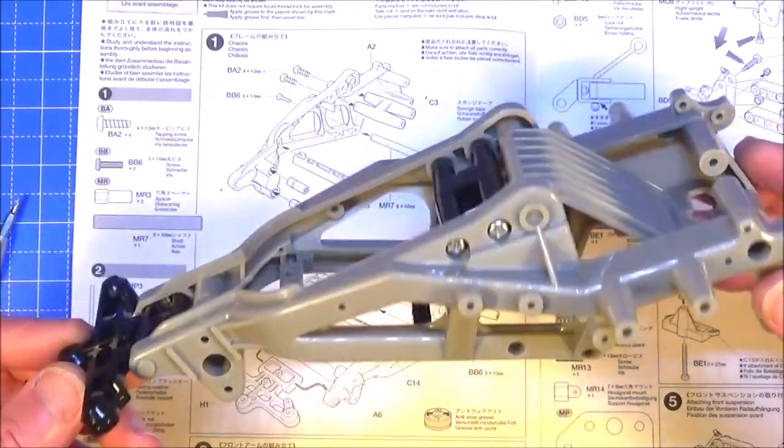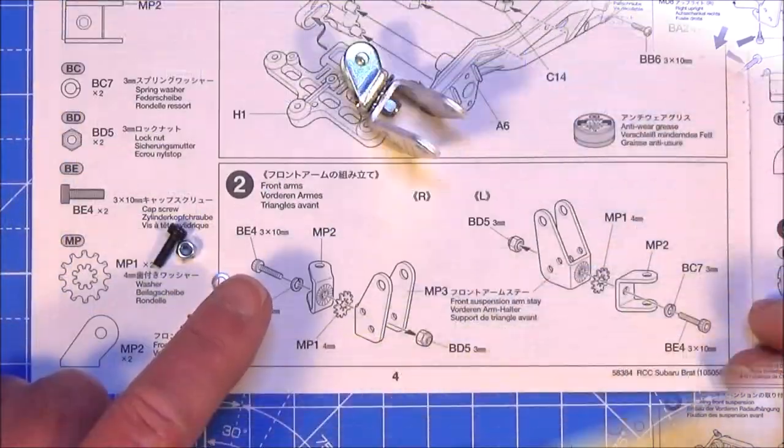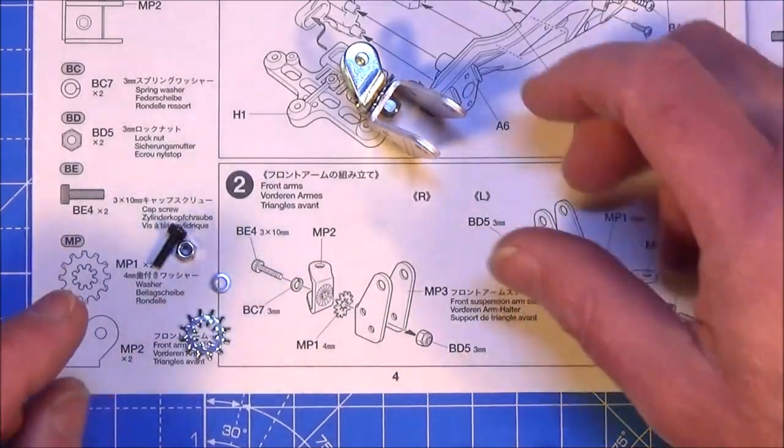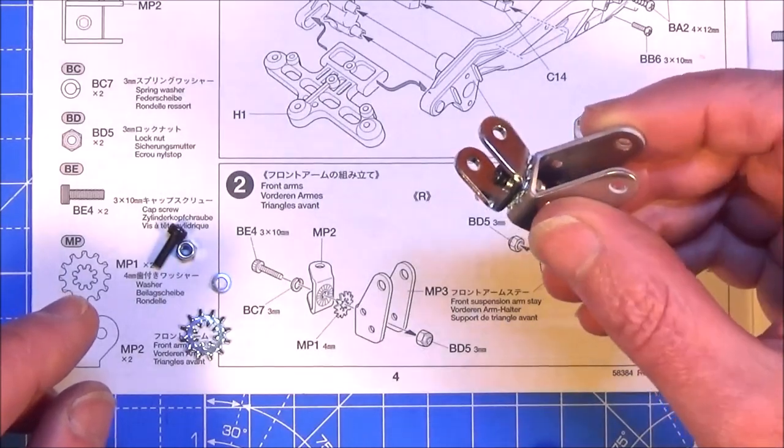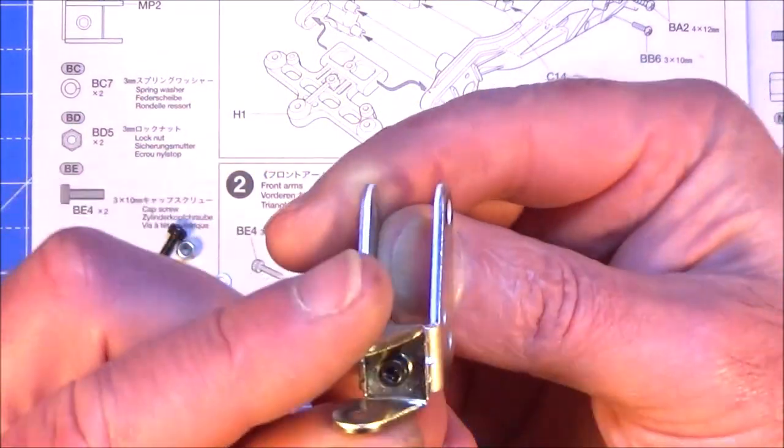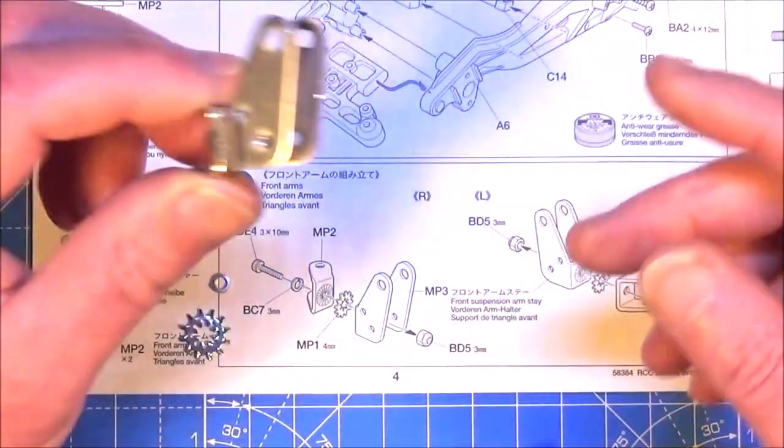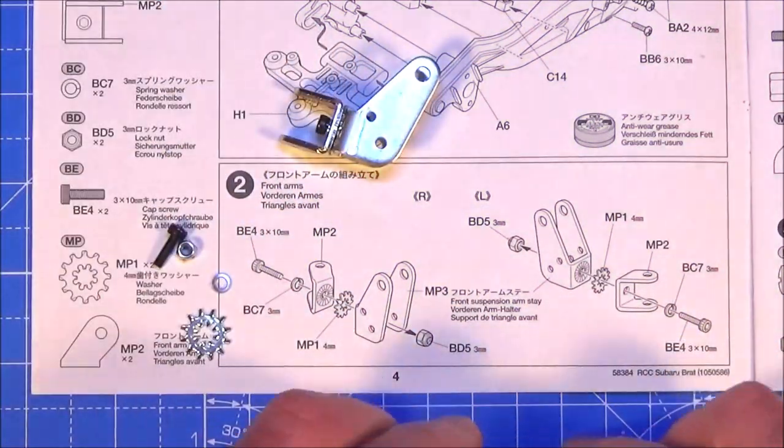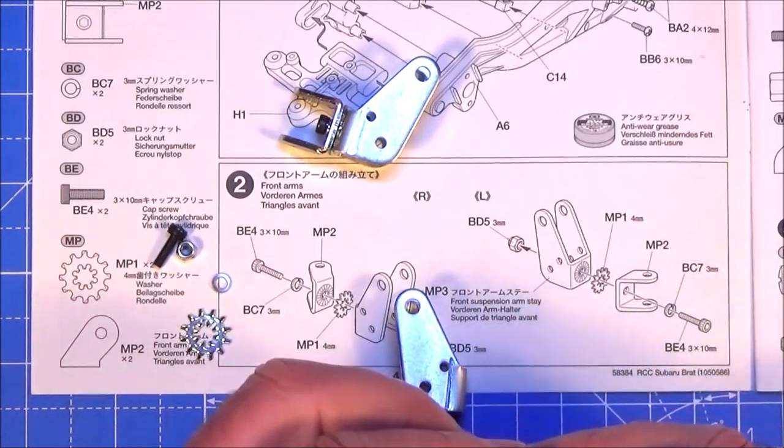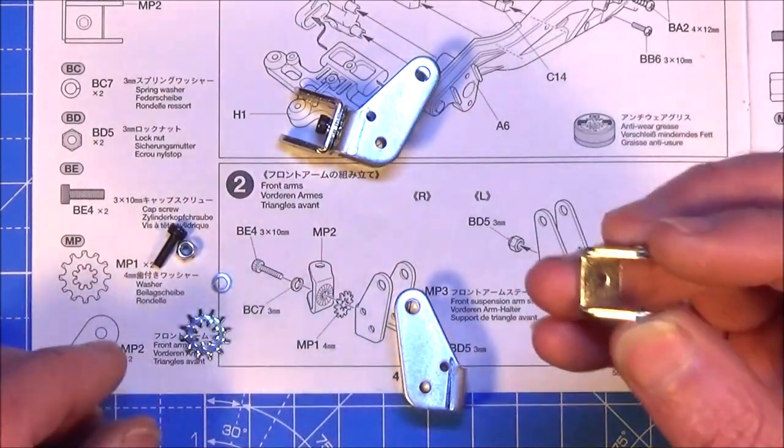Okay then and on to step 2, which the manual says is the front arms but obviously it's just these front stays that we're making up. I've done the first one which is the right hand side and it'll look something like this when you've done it. So you need to do the same but the opposite for the left hand side. Just follow the orientation of the diagram.